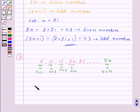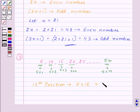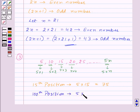So let us find out the multiple of 5 at the fifteenth position. That will be 5 into 15, which is equal to 75. Similarly, the multiple of 5 at the hundredth position will be 5 into 100, which is equal to 500.